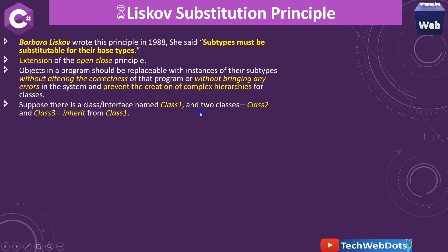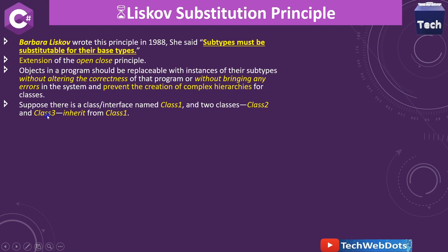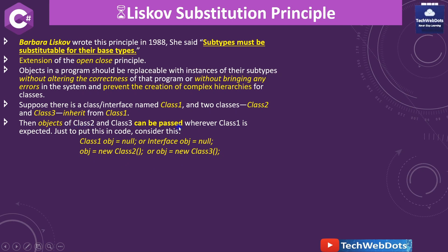For example, suppose there is a class or interface called Class1, and there are two other classes, Class2 and Class3, which inherit from Class1. All the features of Class1 will be available in Class2 and Class3. The golden rule says subtypes must be substitutable for their base types, so if you create objects of Class2 and Class3, those can be passed wherever Class1 is expected.